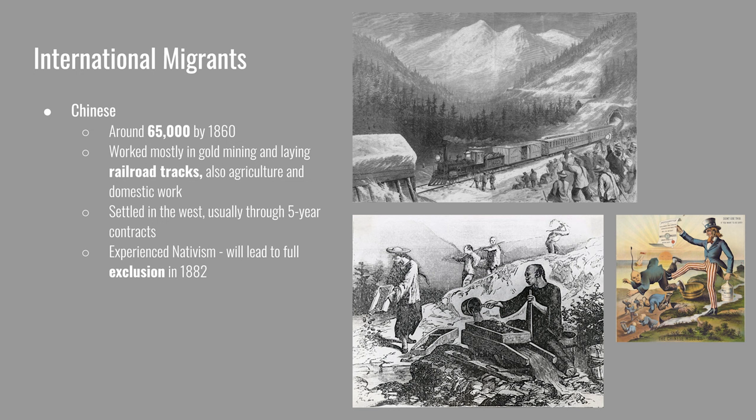The Chinese are not specifically listed by the key concepts, but they are important. They're not coming to the United States in as large numbers — only about 65,000 had arrived by 1860. However, the work that they did was really important. They worked mostly in gold mining and laying railroad tracks in the West, and their labor was critical for the completion of the transcontinental railroad. Some also did agricultural and domestic work. They settled around the West, usually coming over on 5-year contracts. Because their migration was on a temporary basis, there was a high disparity between the number of Chinese men and women who came, making it more difficult for larger communities to develop. Chinese migrants experienced the worst nativism of the three groups and were completely excluded from migrating to the United States by 1882.